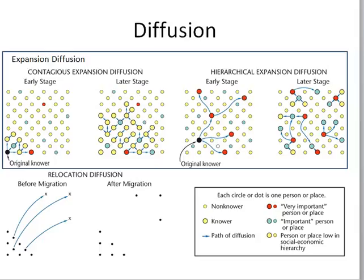A lot of people had questions about diffusion. There are two major types: expansion diffusion and relocation diffusion. Expansion diffusion happens relatively quickly and the number of knowers — people who practice a new concept — increases significantly. In relocation diffusion, you may not have a lot of new knowers. Within expansion diffusion, there are two subtypes: contagious diffusion and hierarchical diffusion.